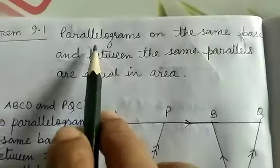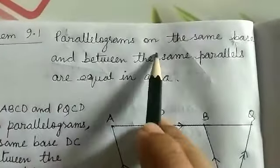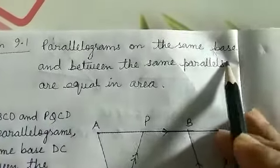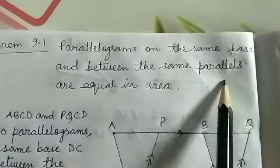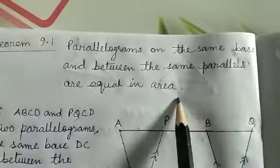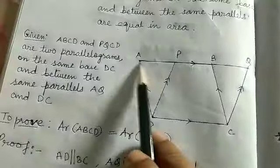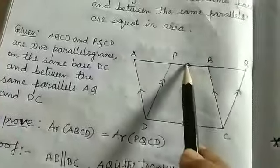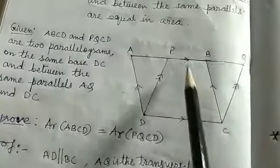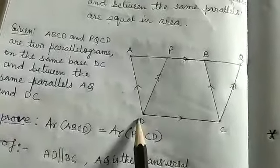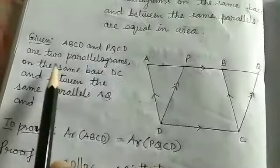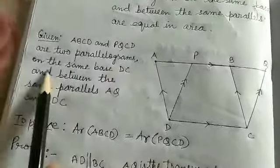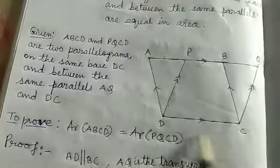Theorem number one: parallelograms on the same base and between the same parallels are equal in area. I have taken two parallelograms — one is ABCD and the second parallelogram is PQCD. These two parallelograms ABCD and PQCD are on the same base DC.